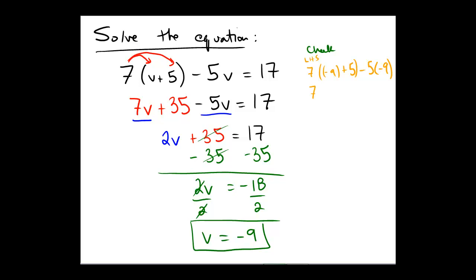So, 7 times negative 4, minus 5 times negative 9 would be minus a negative 45.